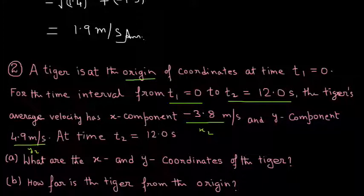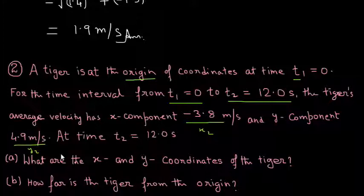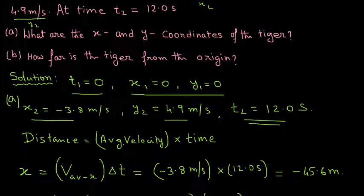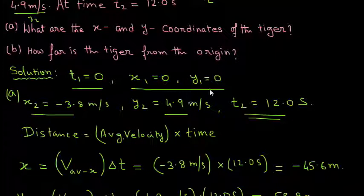The known quantities are: x1 = 0, y1 = 0, t1 = 0 since the tiger starts at the origin. The average velocity components are v_avg_x = −3.8 m/s and v_avg_y = 4.9 m/s, and t2 = 12 seconds.